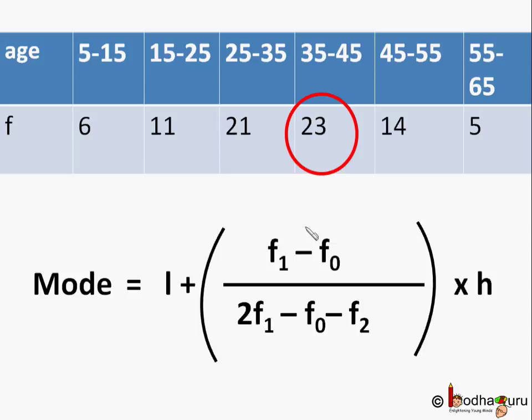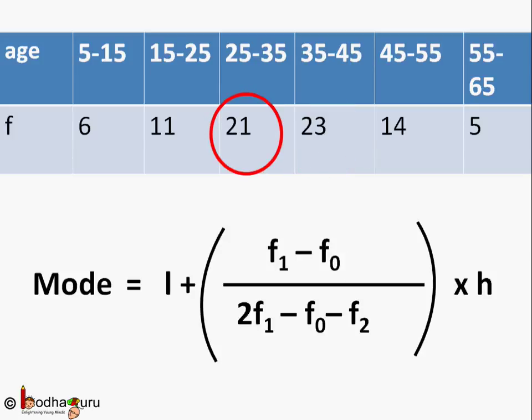F1 equals the frequency of the modal class, which is 23. F0 equals the frequency of the class preceding the modal class, which is 21 from the 25 to 35 age group. F2 equals the frequency of the class succeeding the modal class, which is 14 from the 45 to 55 age group. So we put this value in the formula.